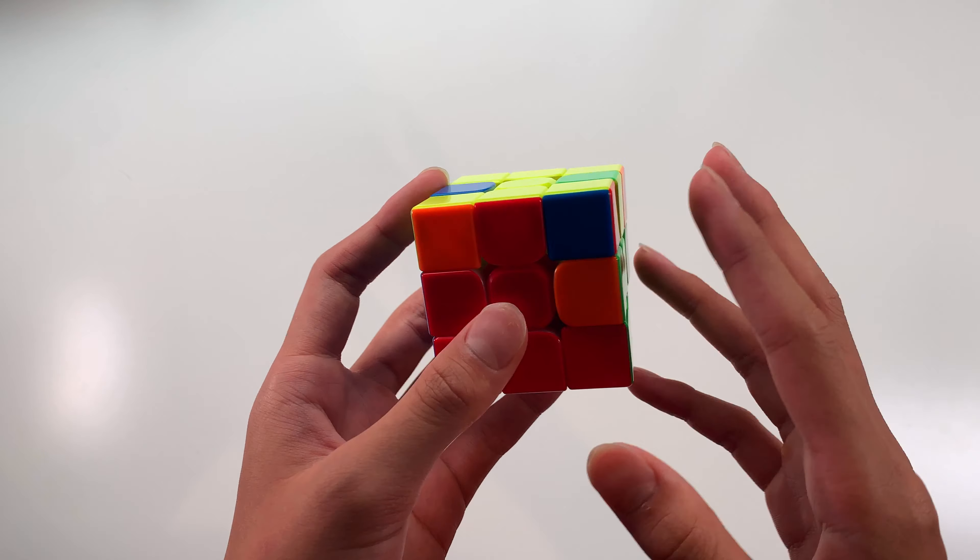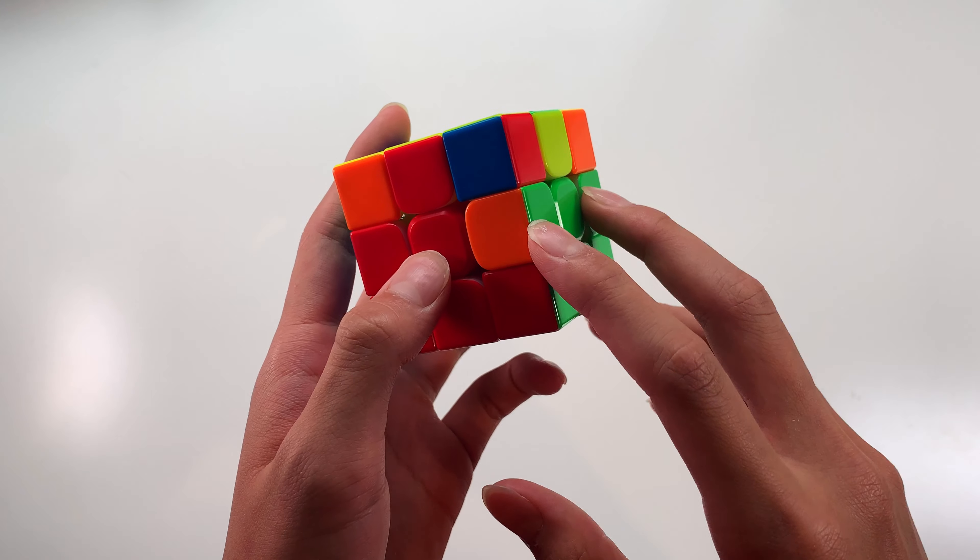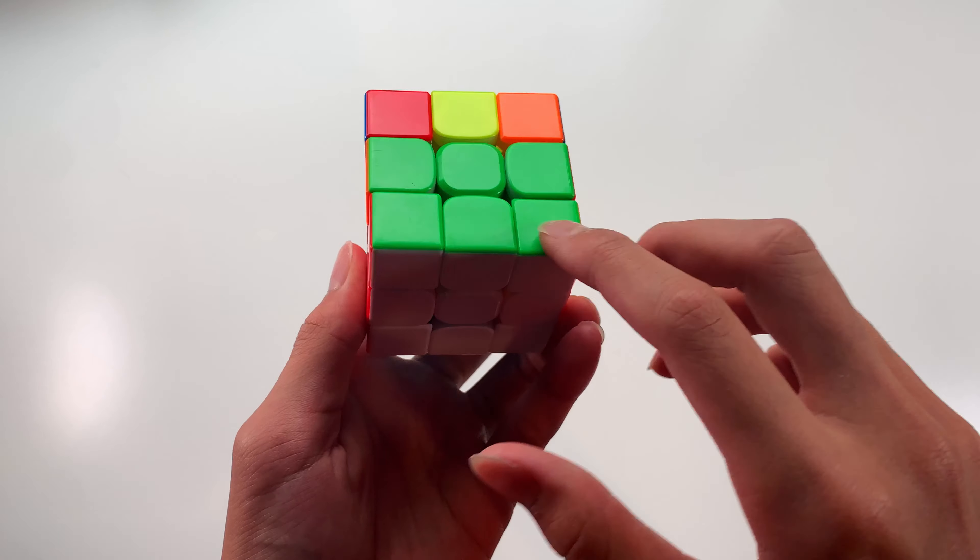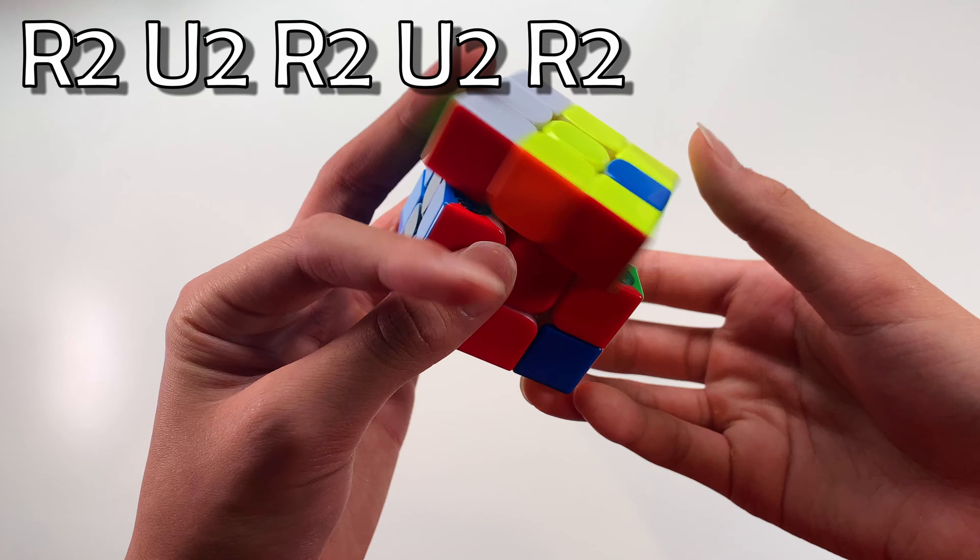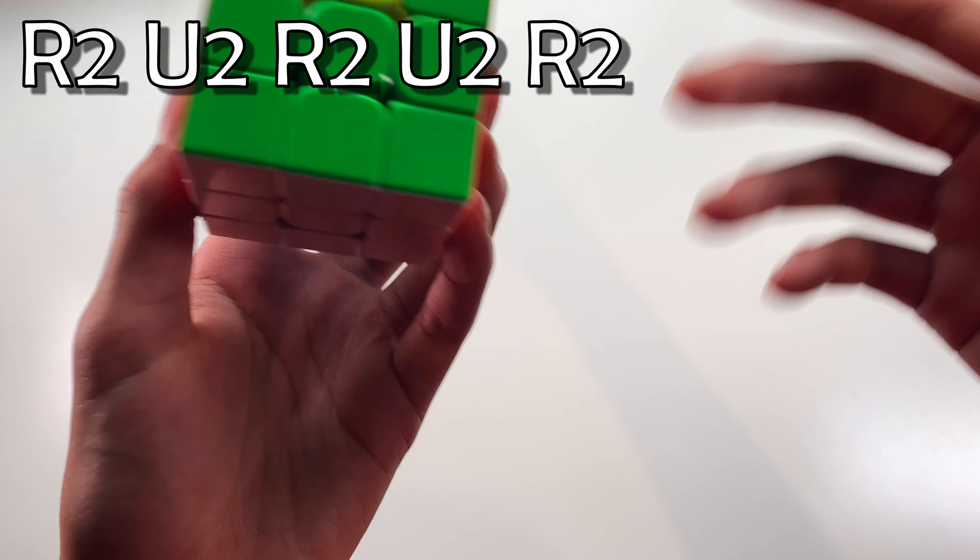Next up, we have one of the more well-known cases, it's when these two edge pieces need to swap around, and the corners are all solved, and the colors match up here. So this is a pretty easy one, R2, U2, R2, U2, R2. Pretty well-known, but I just wanted to include it in this video.